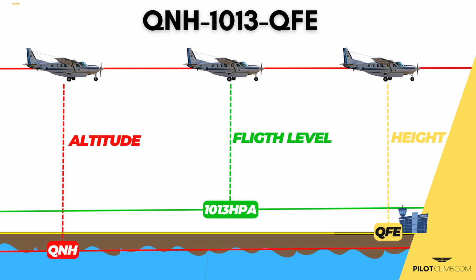If you want to fly flight levels, you need to set the standard pressure reference of 1013.25 hectopascal. So depending on the phase of flight and what is required, you can fly altitude — where you use the QNH as a pressure reference — you can fly height — where you use the QFE as a pressure reference — or you can fly flight levels — where you use the standard pressure reference of 1013.25 hectopascal.